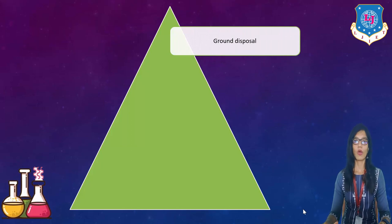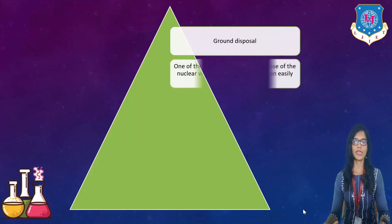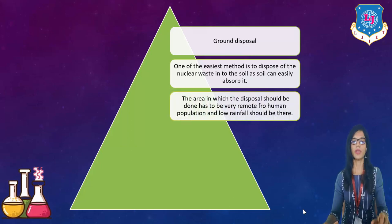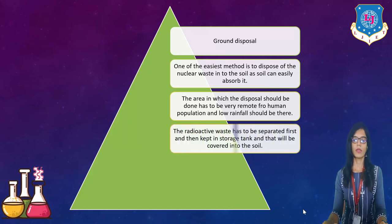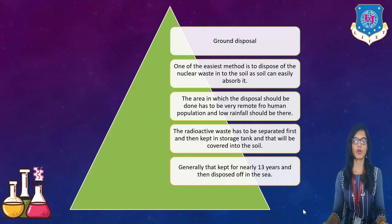First one is ground disposal. So one of the easiest method is to dispose of the nuclear waste into the soil. As soil can easily absorb. The area in which the disposal should be done has to be very removed from human population and low rainfall should be there. The radioactive waste has to be separated first and then capped in storage tank and that will be covered into the soil. Generally that capped for nearly 13 years and then disposed of in the sea.